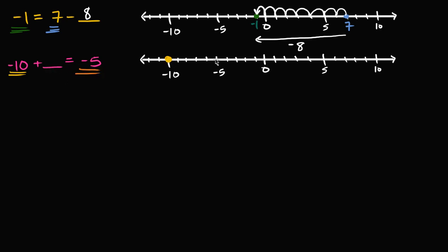Remember, negative five is right over here. If we're adding, that means we're going to be going to the right on the number line — that is if we're adding a positive number. And we see here we're going to the right, going from negative ten to negative five. If we added a negative number, we would move to the left. How much are we adding? We're going to add one, two, three, four, five — positive five. Negative ten plus five is equal to negative five. We just became five less negative, is one way to think about it.